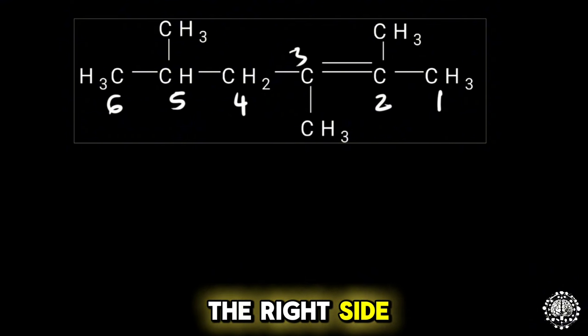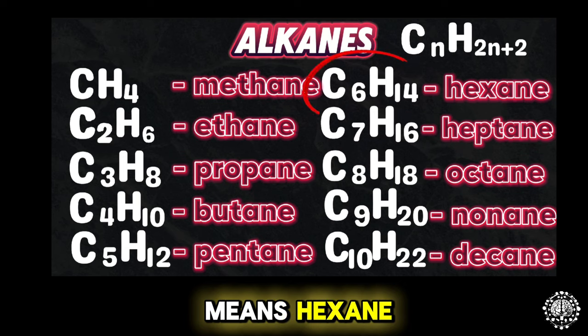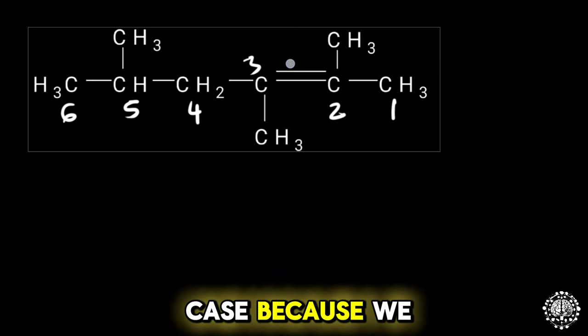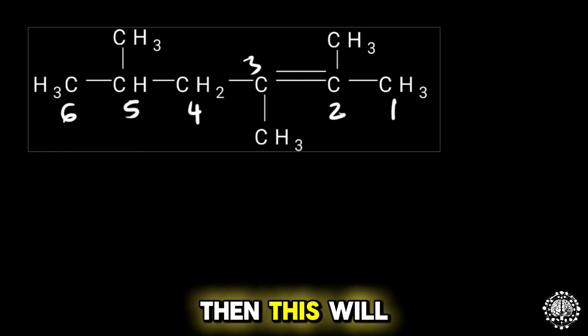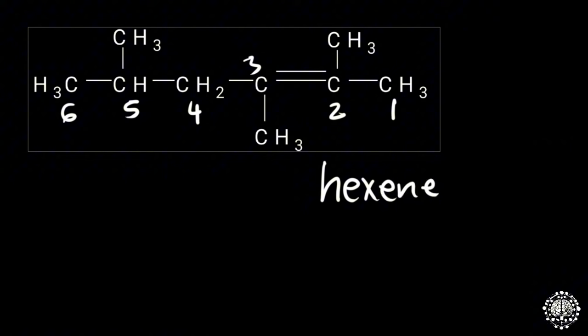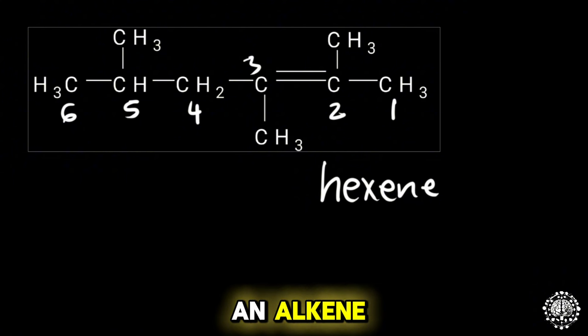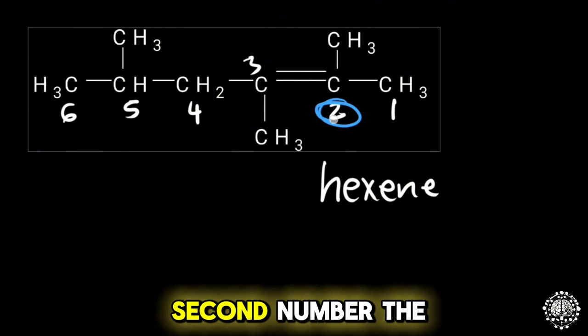Now six carbons means hexane, but in this case because we have two bonds, then this will be hexene because this is an alkene. Now we can see at the second number the bond is there. Because we have the bond at the second part, you'll write 2-hexene.